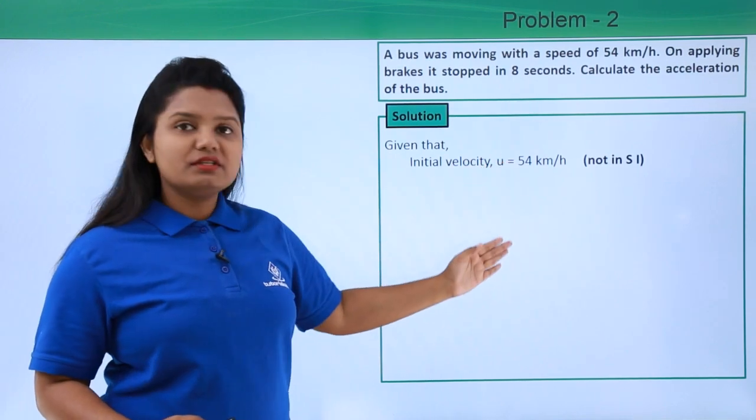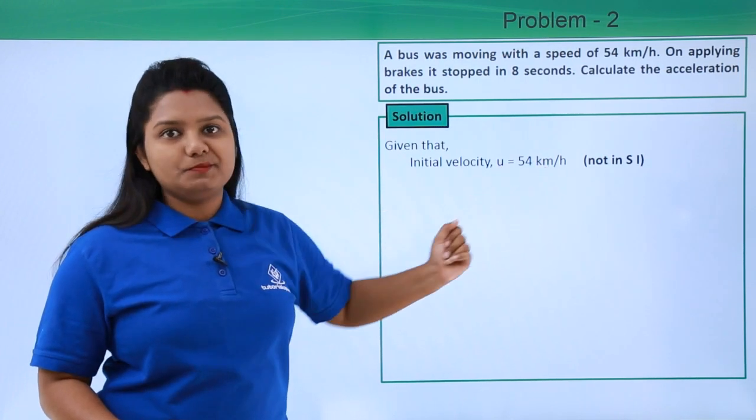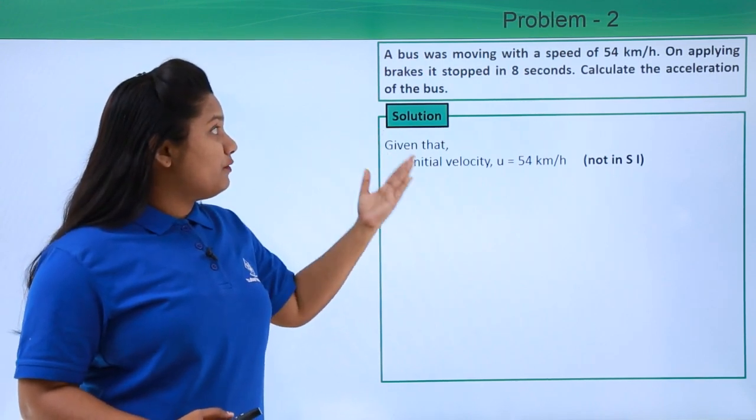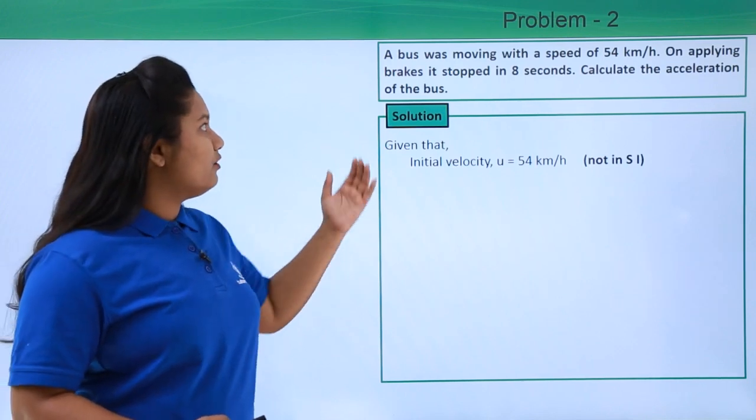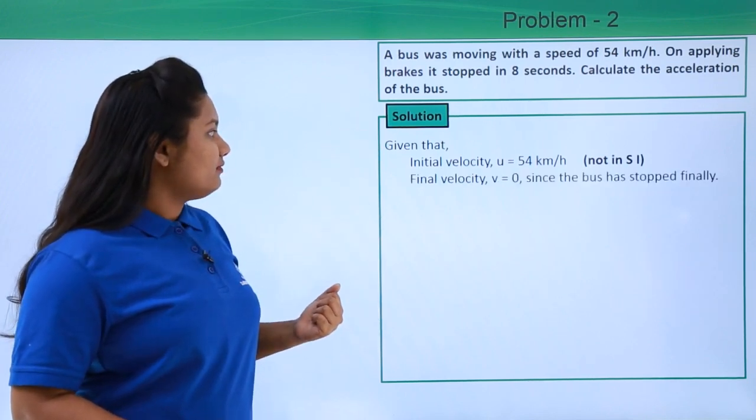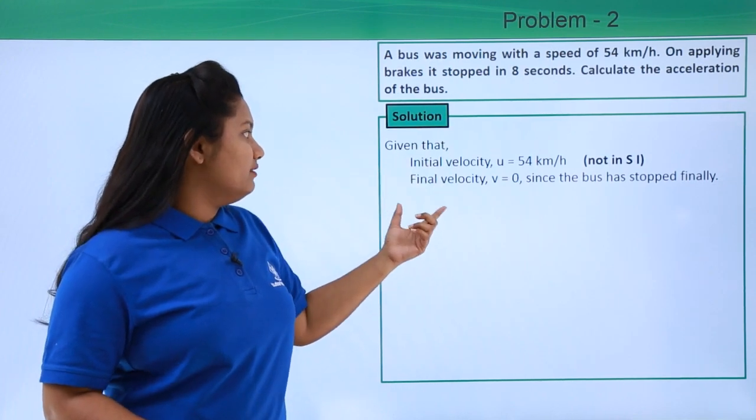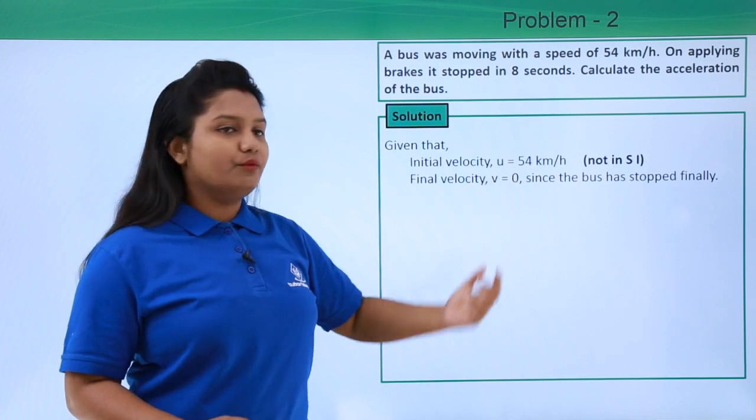Before going to the solution of the problem, we need to convert this into meters per second. Also, the question has provided us with information about the time taken for the vehicle to stop. The vehicle has come to a stop at the end, so its final velocity is taken to be v equals zero since the bus has stopped finally.